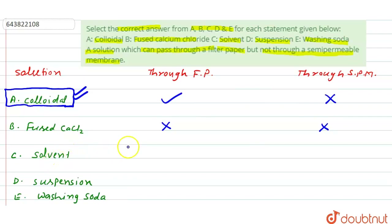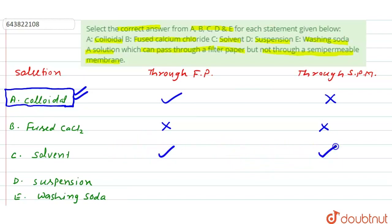For a pure solvent, there is no solute — only the dispersion medium. The size of solvent particles is smaller than the pore size of both the semi-permeable membrane and the filter paper, so they can pass through filter paper as well as the semi-permeable membrane.